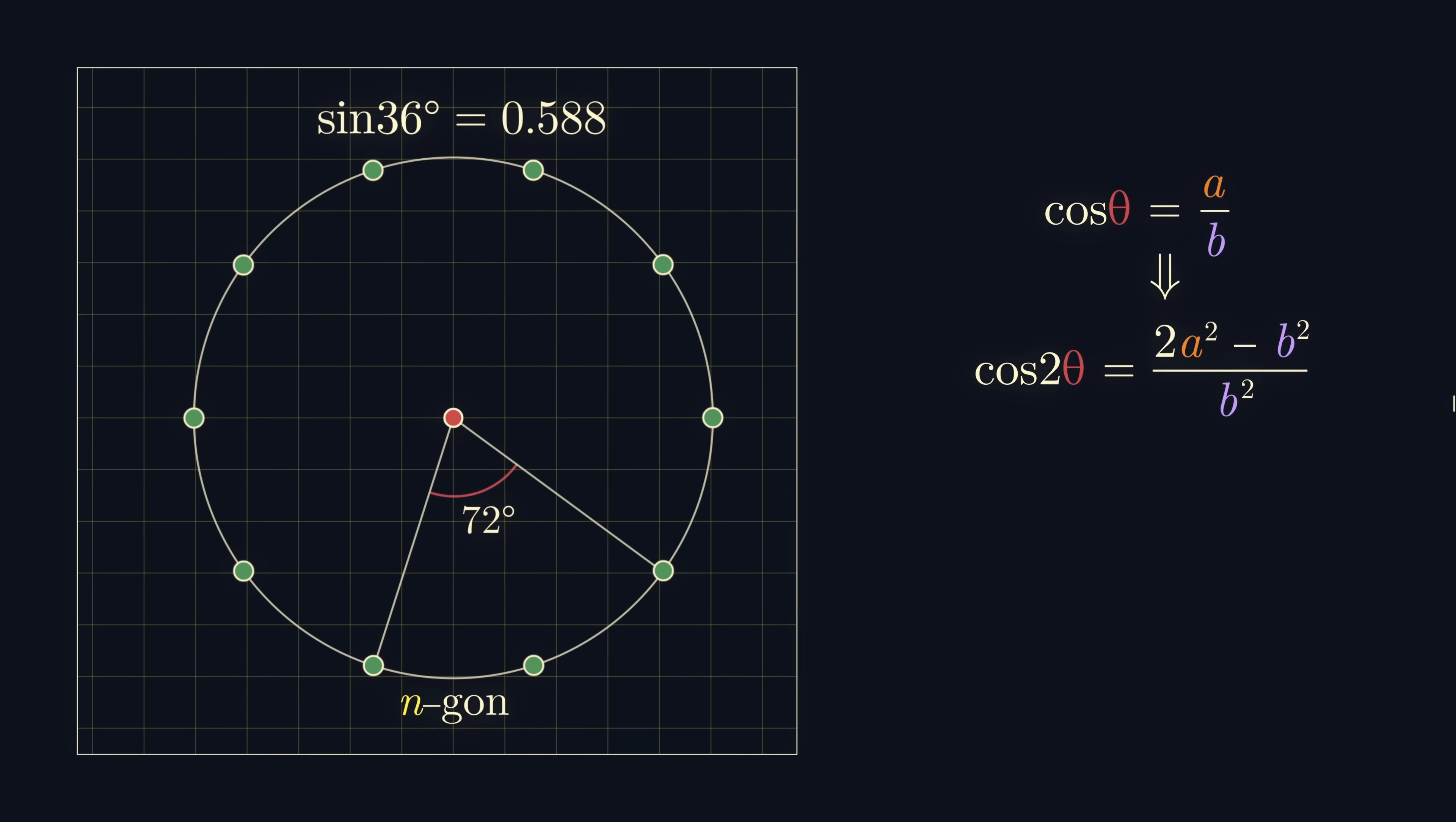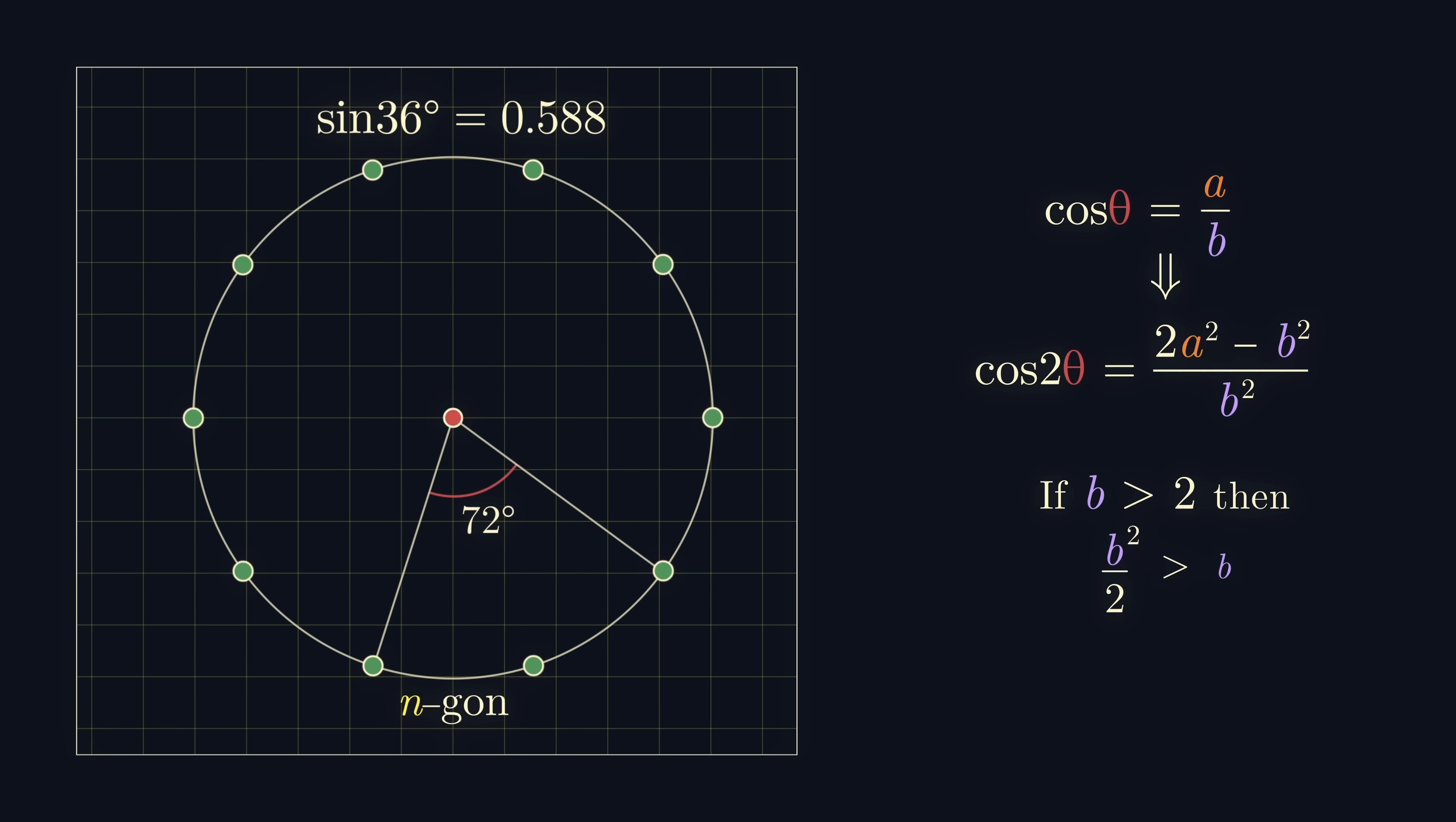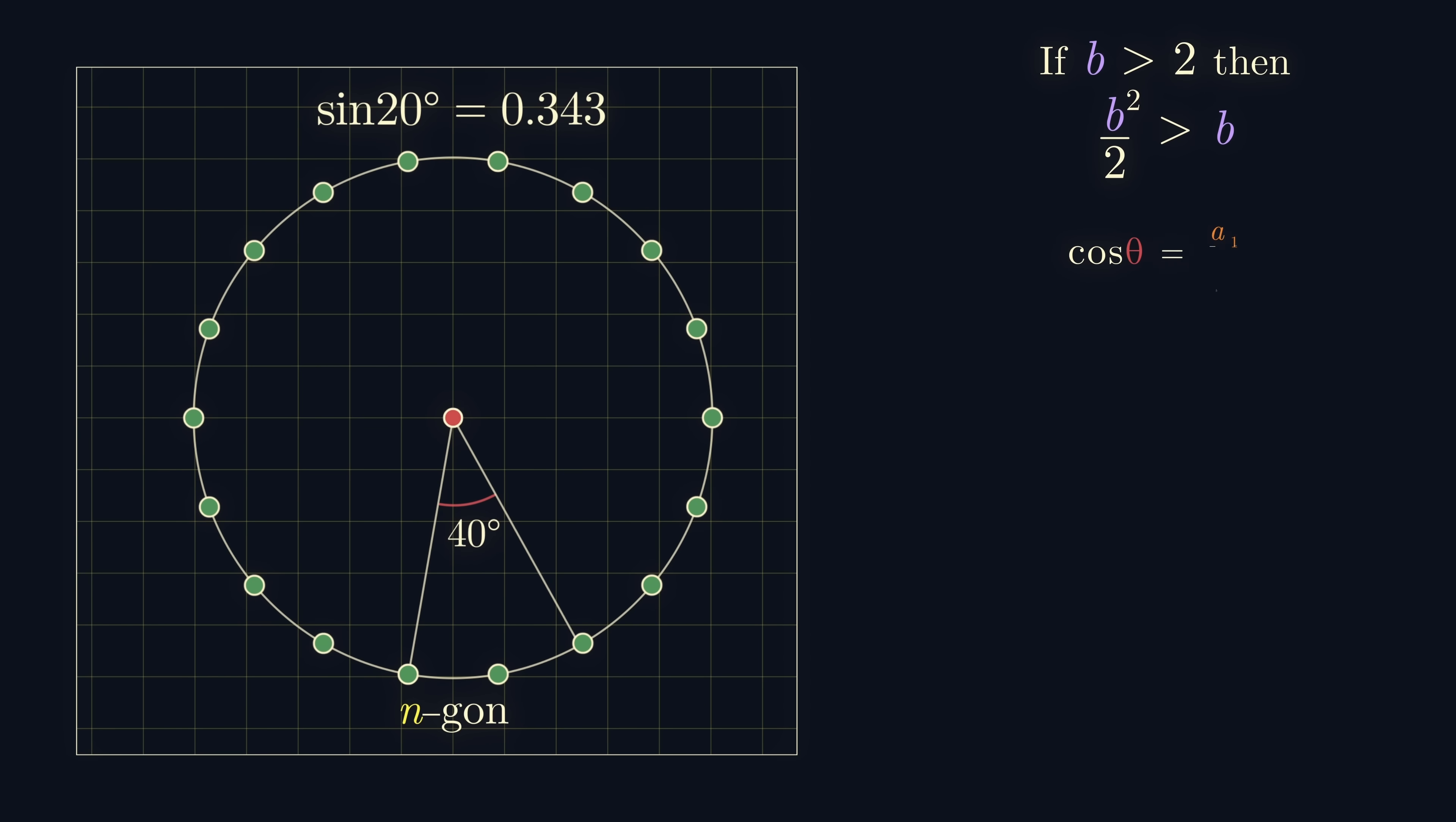This means that the denominator of the fraction can be simplified by at most a factor of 2. Note that if b is greater than 2, then b squared over 2 is strictly greater than b. So, this process of doubling the angle and taking the cosine repeatedly will necessarily generate fractions, which, when written in lowest terms, have strictly increasing denominators.